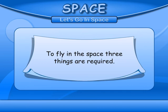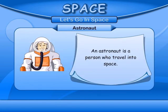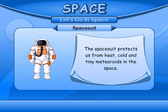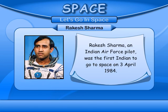Let's go into space. To fly in space, three things are required: an astronaut, a spaceship, and a spacesuit. An astronaut is a person who travels into space. A spaceship is a type of vehicle used for going into space. The spacesuit protects us from heat, cold, and tiny meteoroids in space. Rakesh Sharma, an Indian Air Force pilot, was the first Indian to go to space on 3rd April 1984.